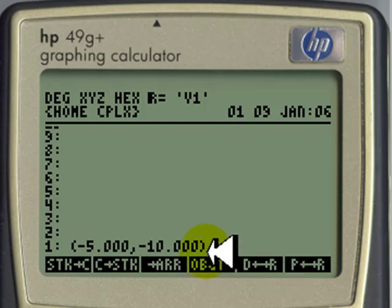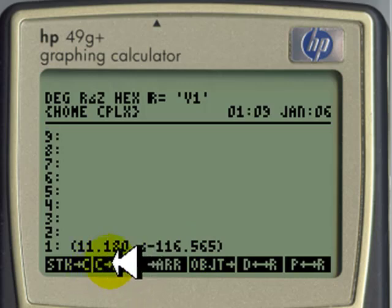that is the current, that is the current but in rectangular form. I do not care for currents in rectangular form. In polar form that current is 11.18, the RMS value of the current, and a phase shift of negative 116.6 degrees.